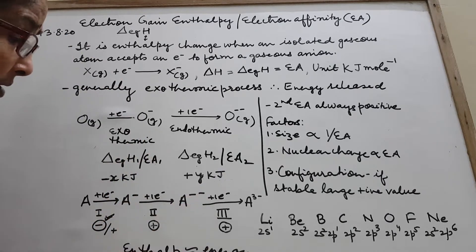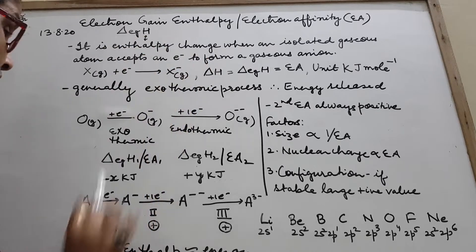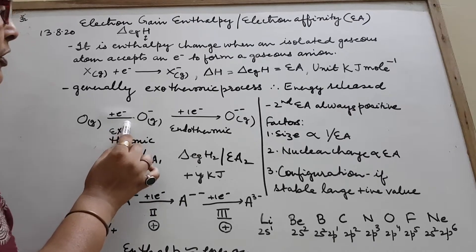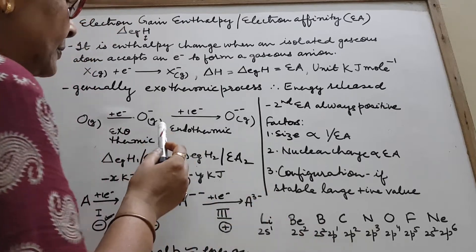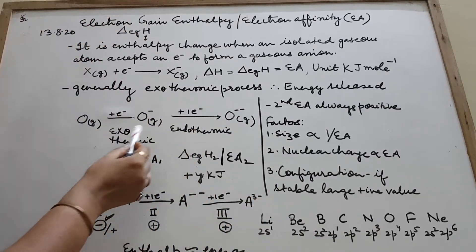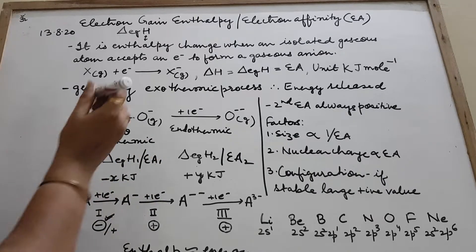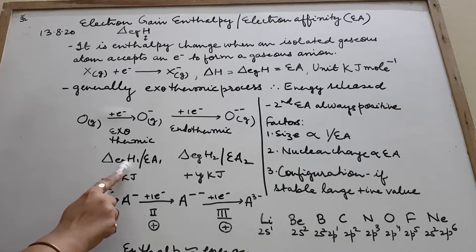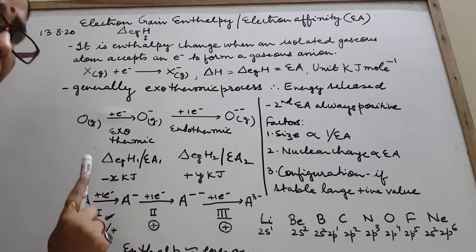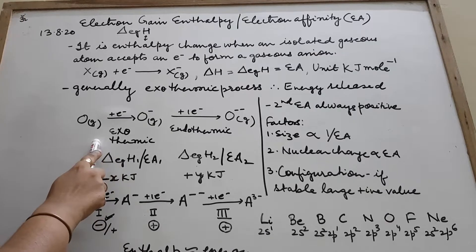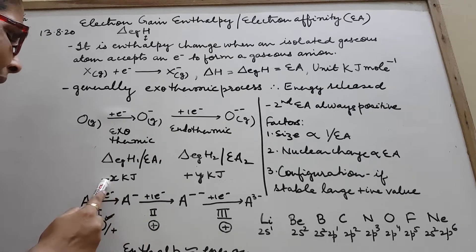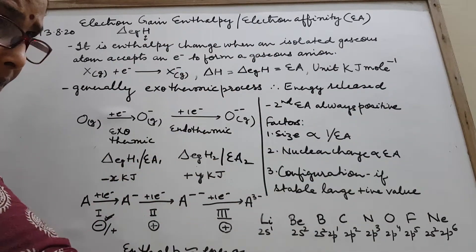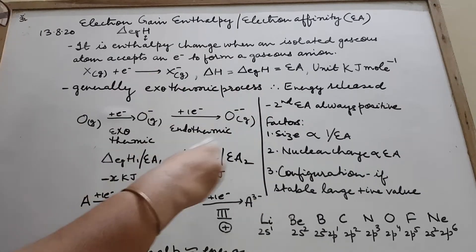So I repeat: the enthalpy change — energy change — taking place. Now, take example of oxygen O in the gaseous form. It adds an electron and gets converted into O⁻ anion in the gaseous form. Energy was released; it was found to be an exothermic process. We call this first EA, or precisely ΔegH₁. Since energy was released, it is −X kJ/mol. Minus means energy was released out of the system.